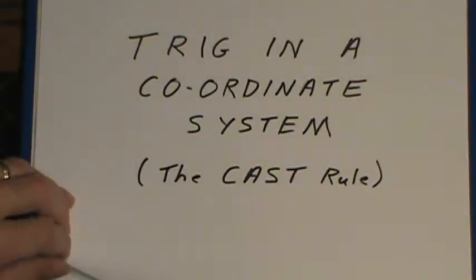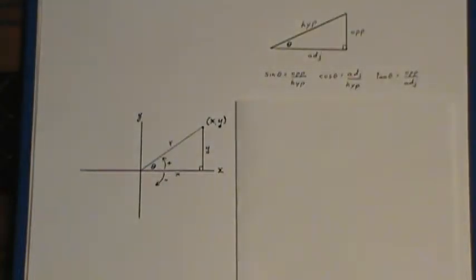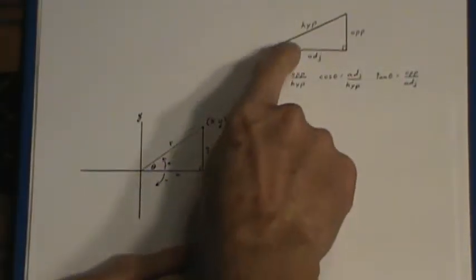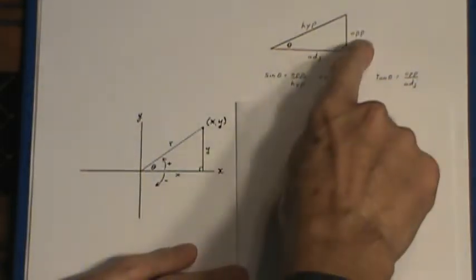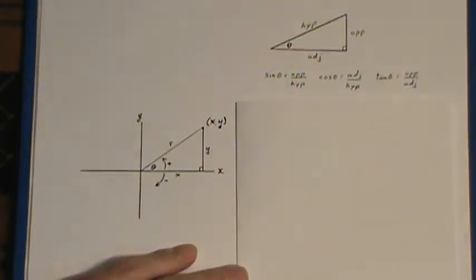Most introductions to trigonometry involve the use of a right-angled triangle where we label sides according to the angle we're considering using opposite, adjacent, and hypotenuse.